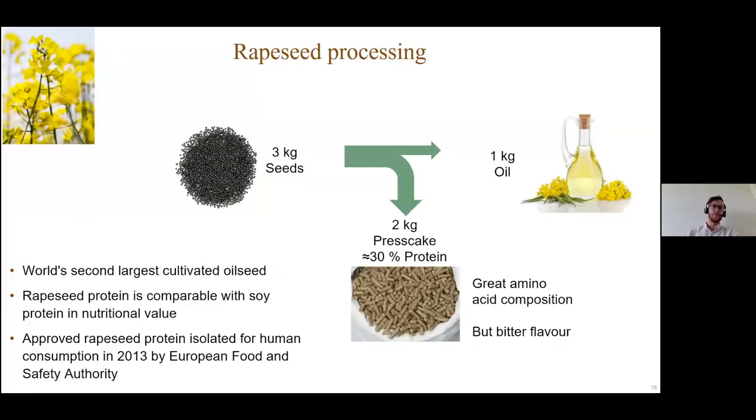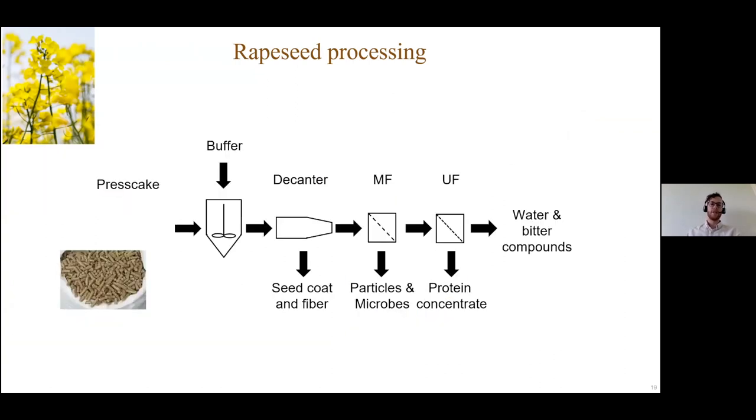We wanted to tell you about food processing, so here's an outlook. There's this project on rapeseed processing. Rapeseeds are nice because you can press them and get rapeseed oil. Two-thirds stays as a press cake. There's high protein content with a nice amino acid composition but a bitter flavor. Membrane processes separate first in the microfiltration step particles and microbes, then in ultrafiltration to up-concentrate the proteins. We looked at this microfiltration step from the filter press cake filtration.